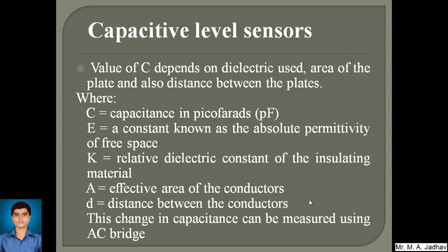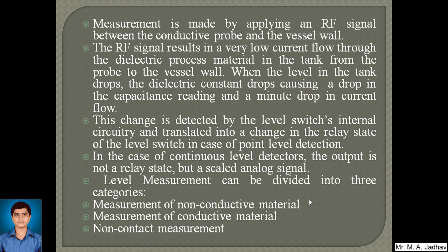The change in capacitance can be measured in an AC bridge. In this capacitive level sensor, the value of K, the dielectric constant, is going to vary because all other parameters are constant. A measurement is made by applying an RF signal between the conductive probe and the vessel wall. The RF signal results in a very low current flow through the dielectric process material in the tank from the probe to the vessel wall. When the level in the tank drops, the dielectric constant drops, causing a drop in the capacitance reading and a minute drop in current flow. This change is detected by the level switch's internal circuitry and translated into a change in the relay state of the level switch in case of point level detection.